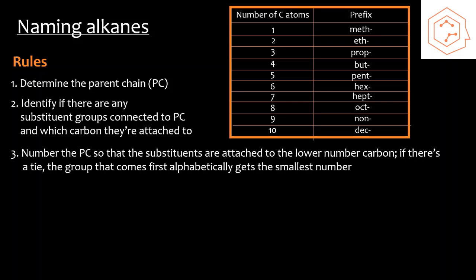In a chain, there are two ends that you can begin numbering from, and for proper naming, you'll want to pick the end where the first substituent you encounter is connected to the carbon with the smallest number. If there's a tie, so say there's two substituents connected to the same carbon number on both ends, then priority is going to go to whichever group comes first alphabetically.